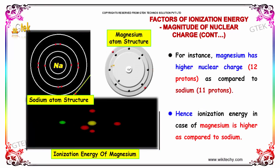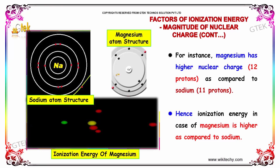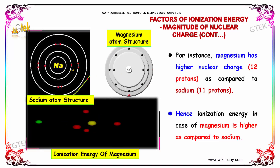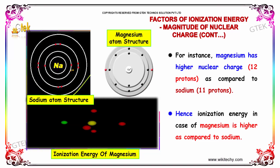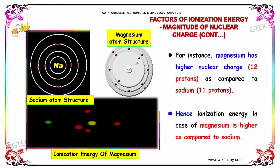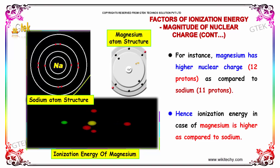For instance, magnesium has a higher nuclear charge with 12 protons, as compared to sodium which has 11 protons. Hence, ionization energy in the case of magnesium is higher as compared to sodium.